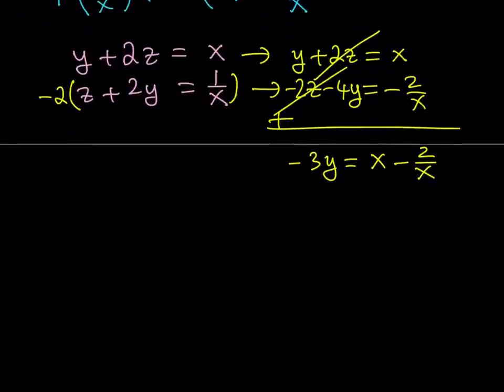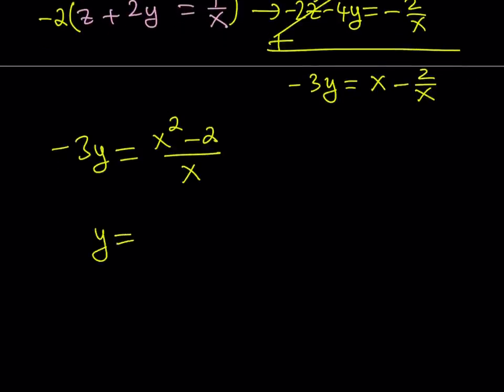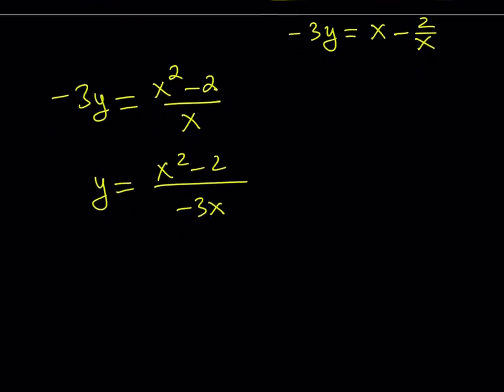So let's go ahead and make a common denominator on the right-hand side and write it as x squared minus 2 over x. And then we are going to divide both sides by negative 3 or multiply both sides by negative 1 third. So from here, y equals x squared minus 2 divided by negative 3x. And then we can simplify this a little bit. So let me go ahead and multiply both the top and the bottom by negative 1 and negate this expression. So y is equal to f of x and f of x is equal to 2 minus x squared divided by 3x.